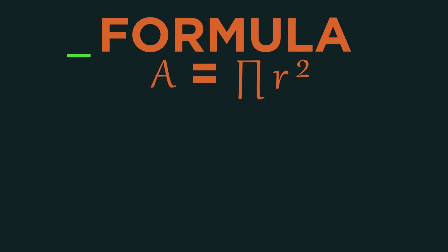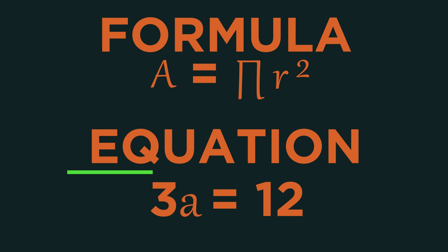A formula is a special type of equation. It shows the relationship between different variables like the area of a circle and its radius. A formula needs more than one variable otherwise it is just an equation.